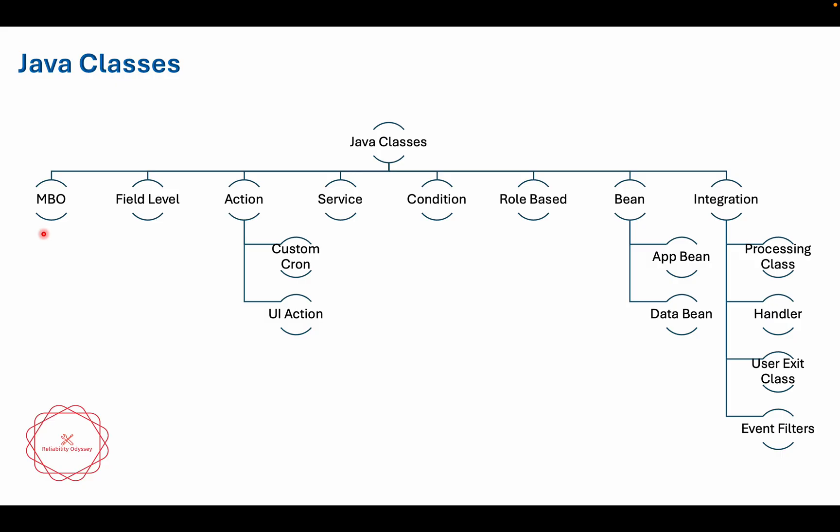Then you have field-level classes. Field-level classes are called when you are performing an operation specifically on a field. For example, if you are tabbing out of a field and you want a certain action to happen, that is handled by field-level classes.